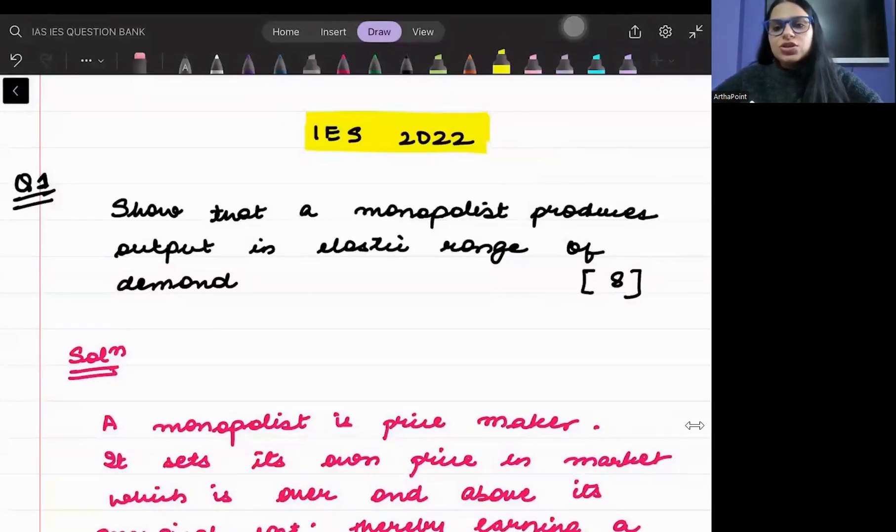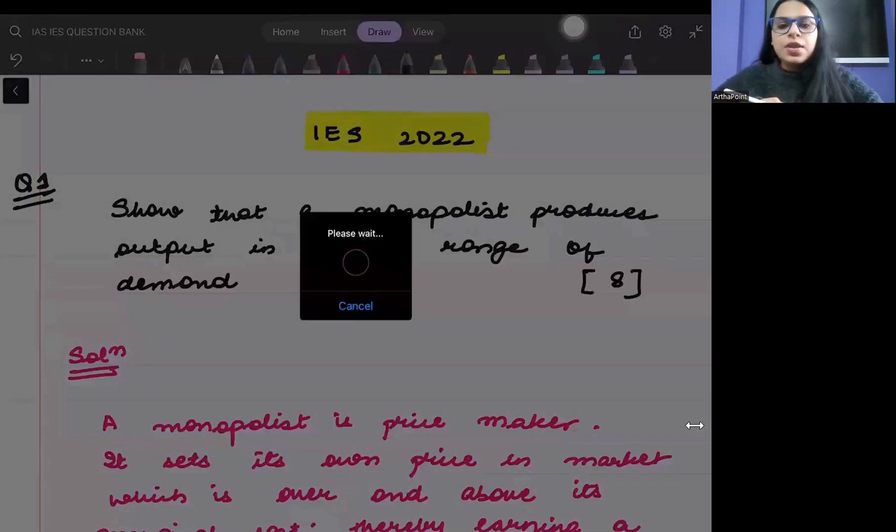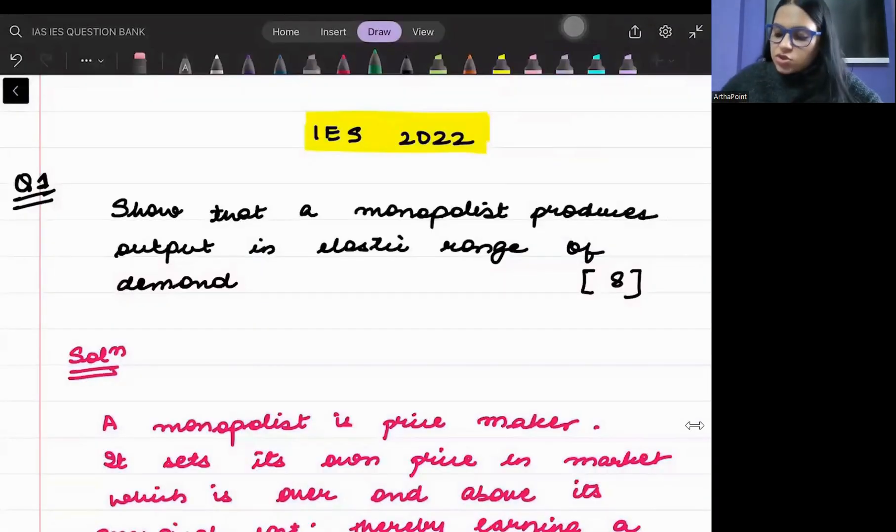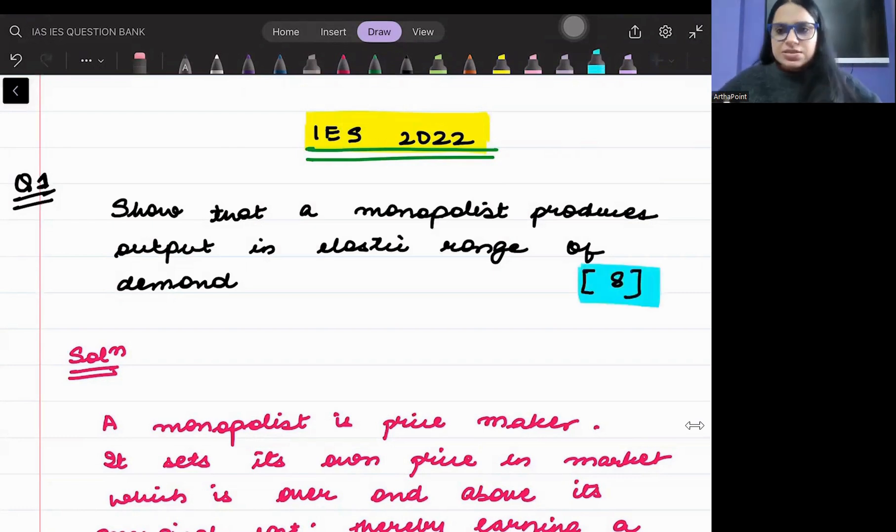Hello, in today's lecture, I'm going to discuss a question from Indian Economic Service 2022. It came for an eight marker. Let us try to see what this question is saying, very simple.